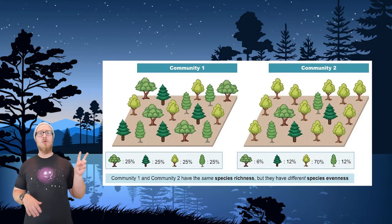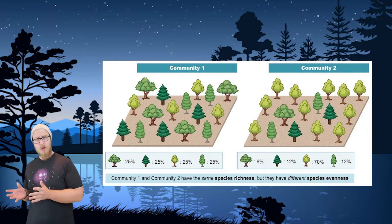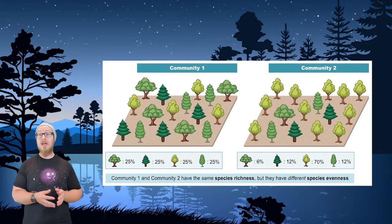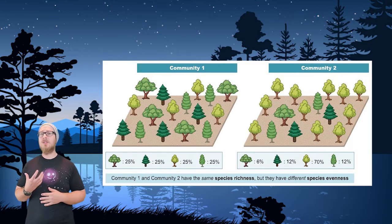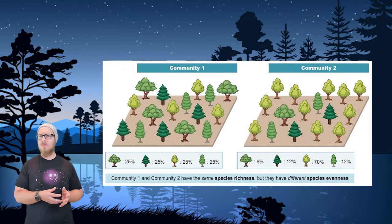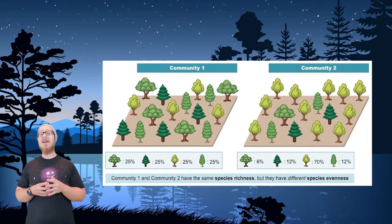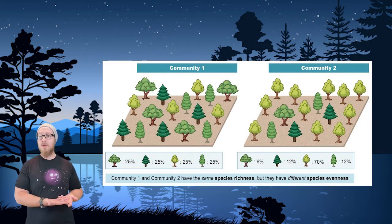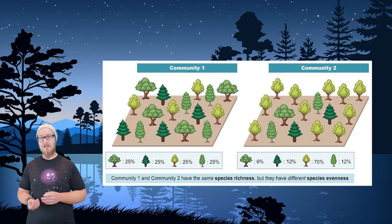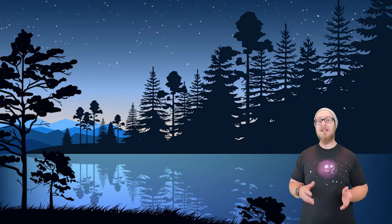Here we see two different communities. Both community one and community two have the same species richness — they contain the same four tree species. But take a look at how those species are distributed. In community two, there is a dominant species that vastly outnumbers the other trees. So despite having the same number of species, community two is less biodiverse because it has lower species evenness.